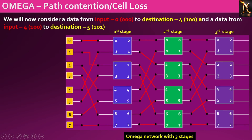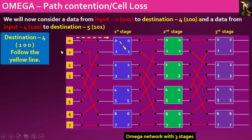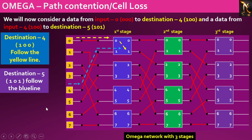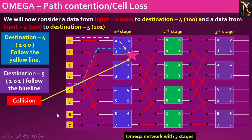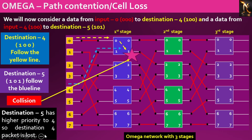In this segment, we'll delve into path contention or cell loss. Consider the scenario where a data packet travels from port 0 to port 4, and simultaneously another packet travels from port 4 to port 5. Both packets have destination addresses 100 and 101 respectively. Since the most significant bits in both destination addresses are 1, the data will be routed to the lower port in the first stage, leading to a collision. In such cases, the packet with the higher order destination number, destined for port 5, will be prioritized, while the other packet may be lost.